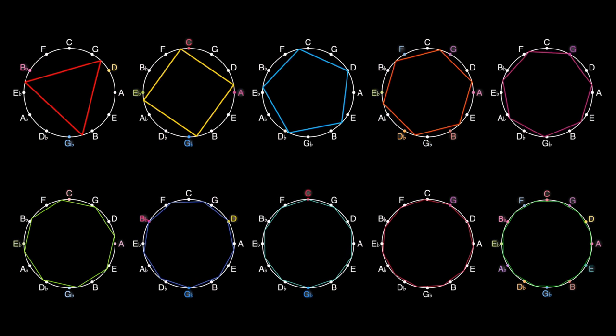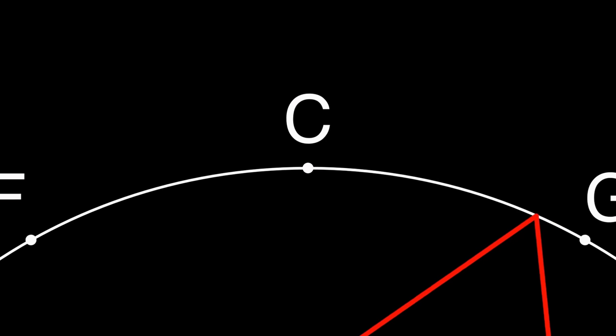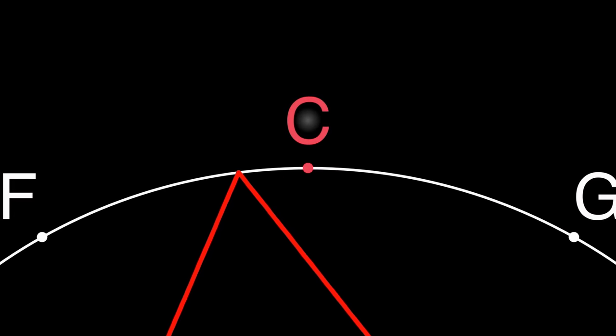What would it sound like if we were to rotate regular polygons on the circle of fifths? And every time a vertex of the rotating polygon crosses over a note, that note gets played.